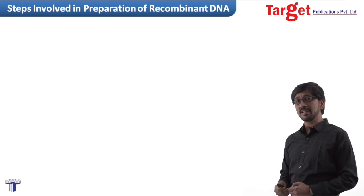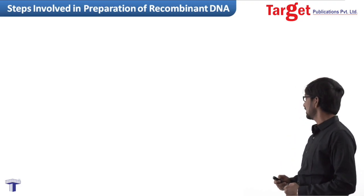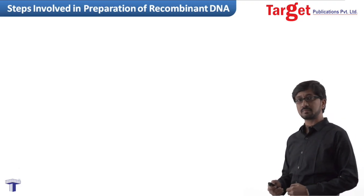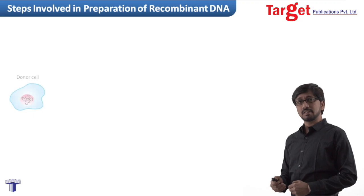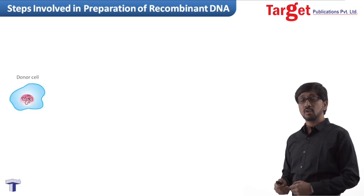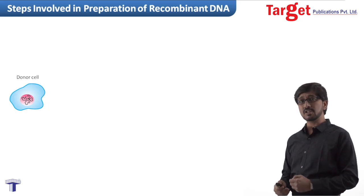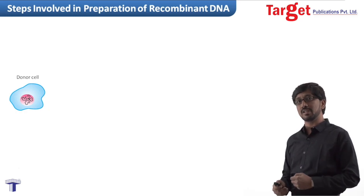To prepare a recombinant DNA, first of all we will require a donor cell. This donor cell provides us a desired gene which is also known as gene of interest. So the first step is isolation of genetic material from the donor cell.